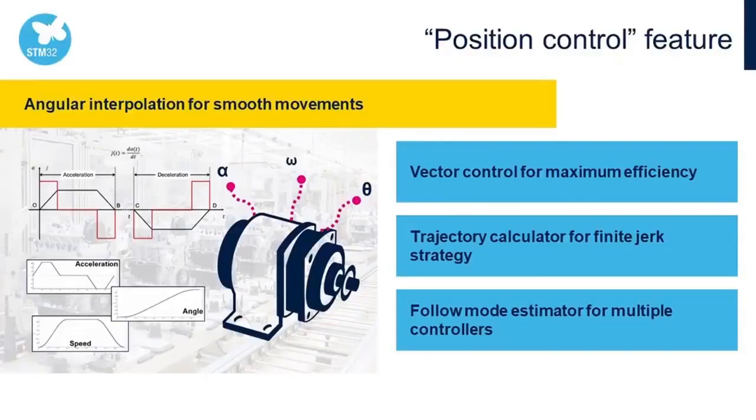This enables the position control algorithm to compute the best parameters to move the rotor from one position to another, starting from zero speed, ending with zero speed, and without requesting a step variation in angular acceleration that is physically impossible for the motor.